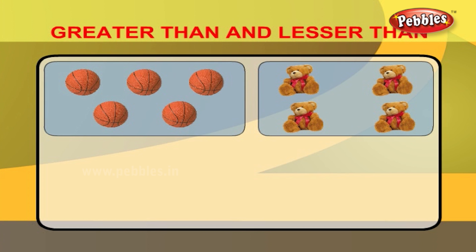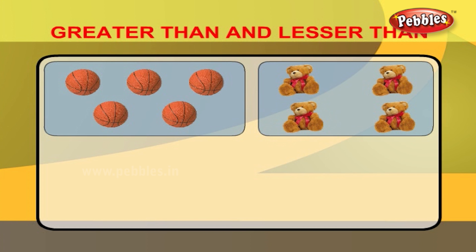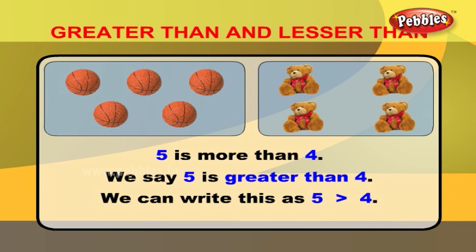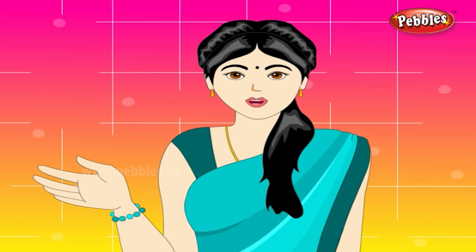Let us now compare these pictures. There are 1, 2, 3, 4, 5 balls. And 1, 2, 3, 4 teddy bears. 5 is more than 4. In other words, we say 5 is greater than 4. We can write this as 5 greater than 4. Now let us learn about lesser than.